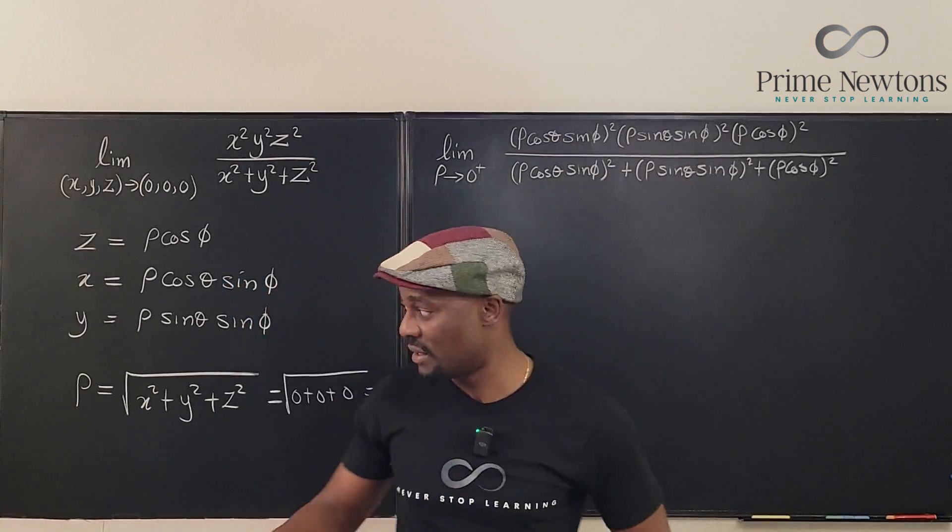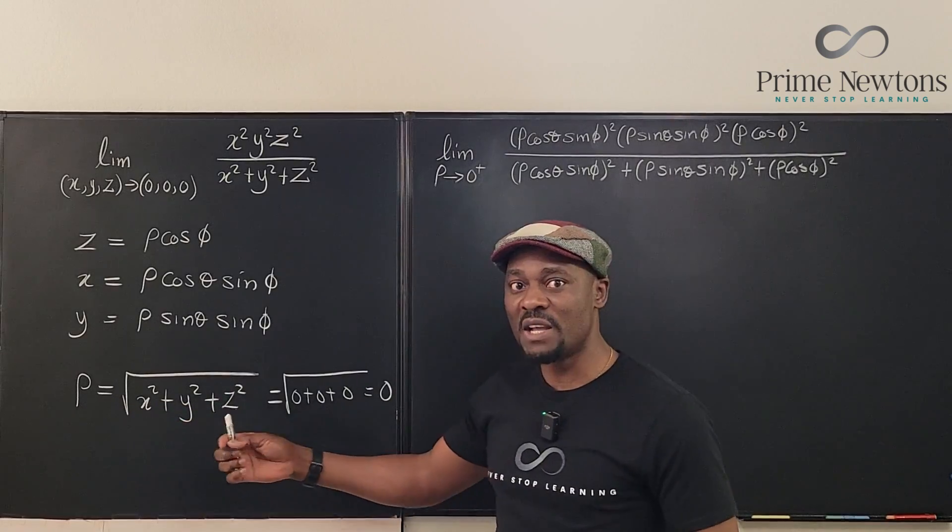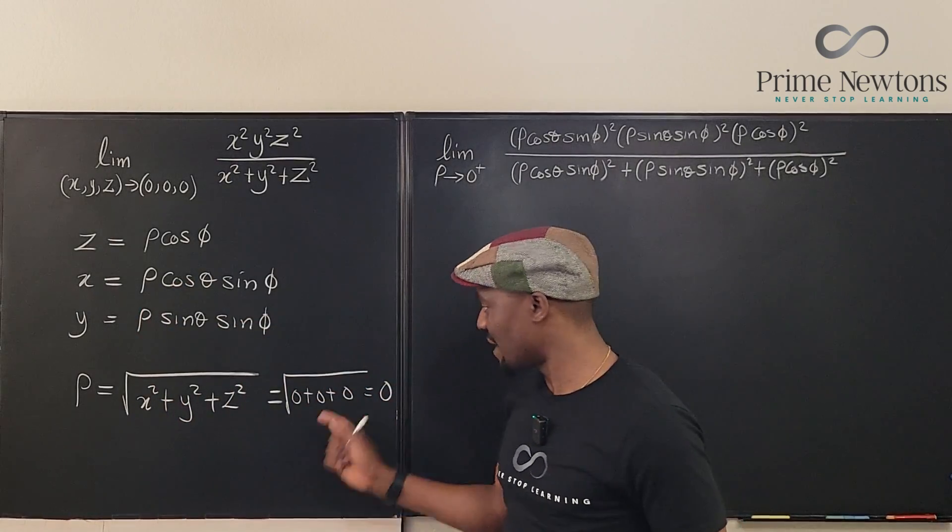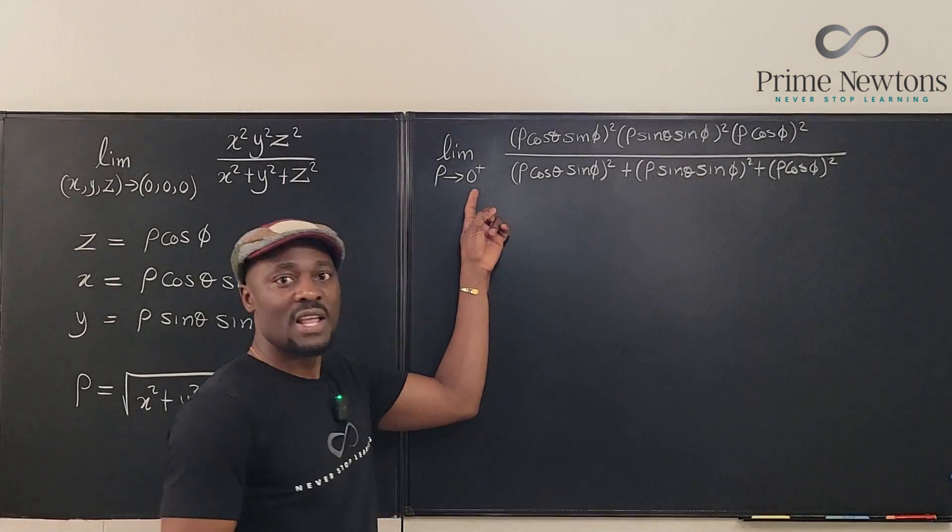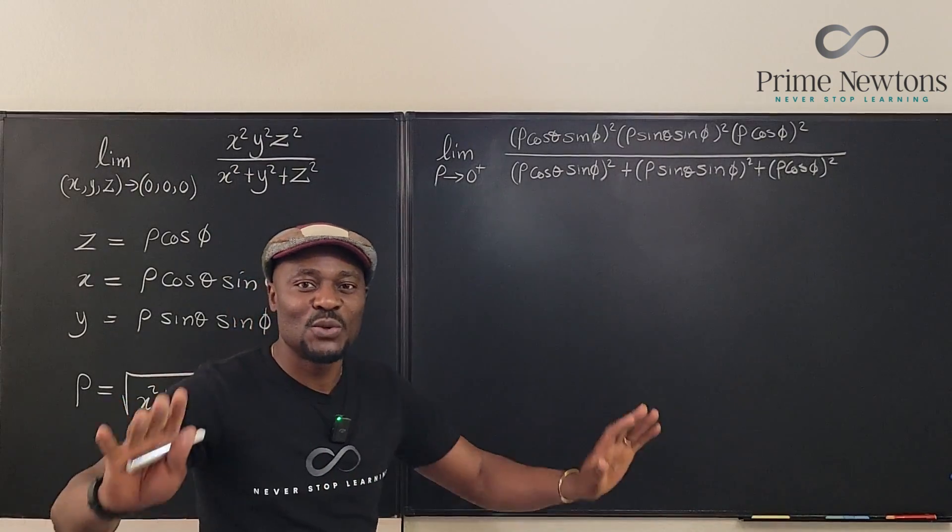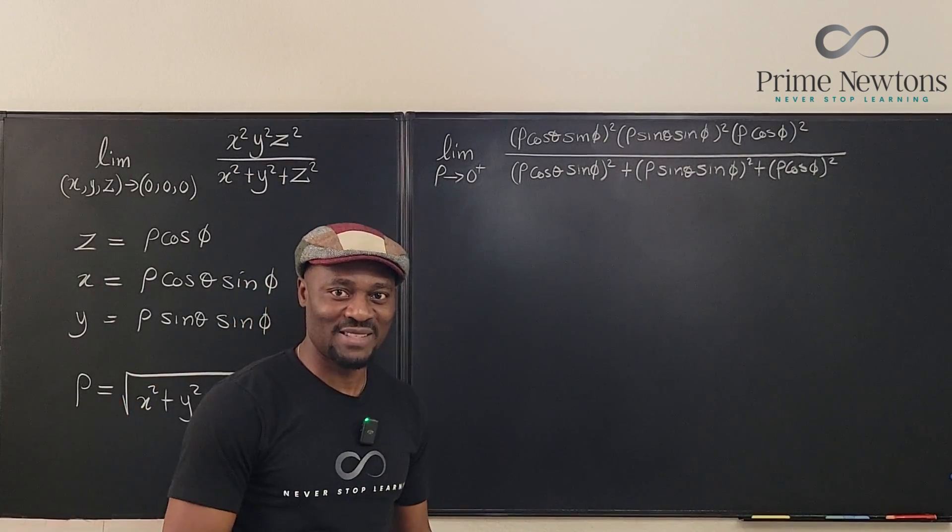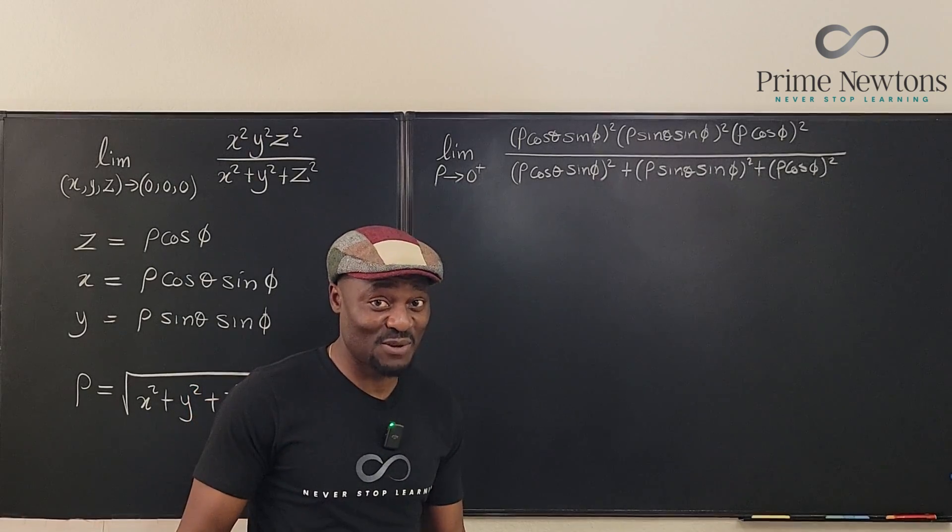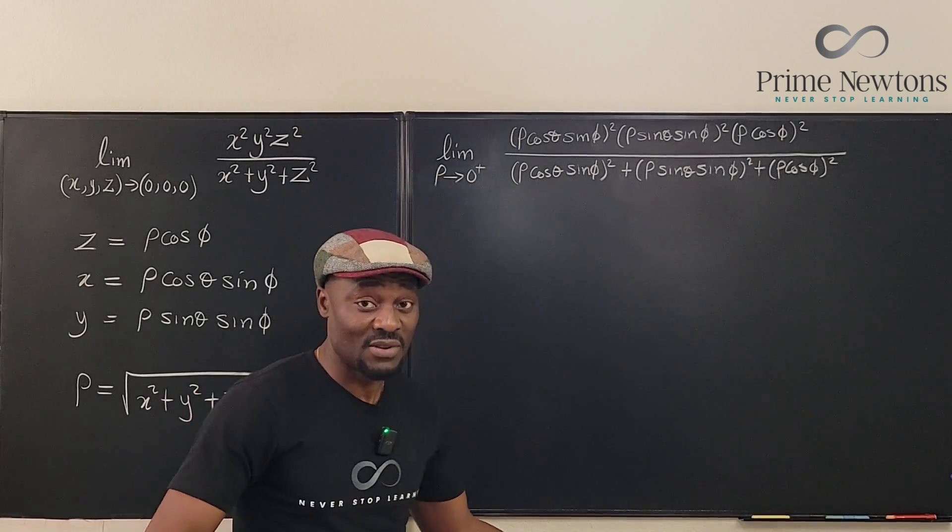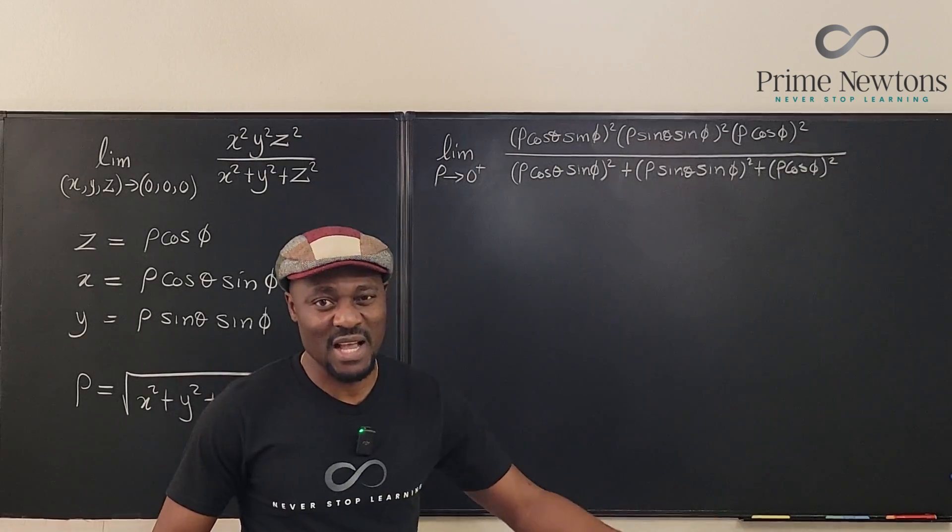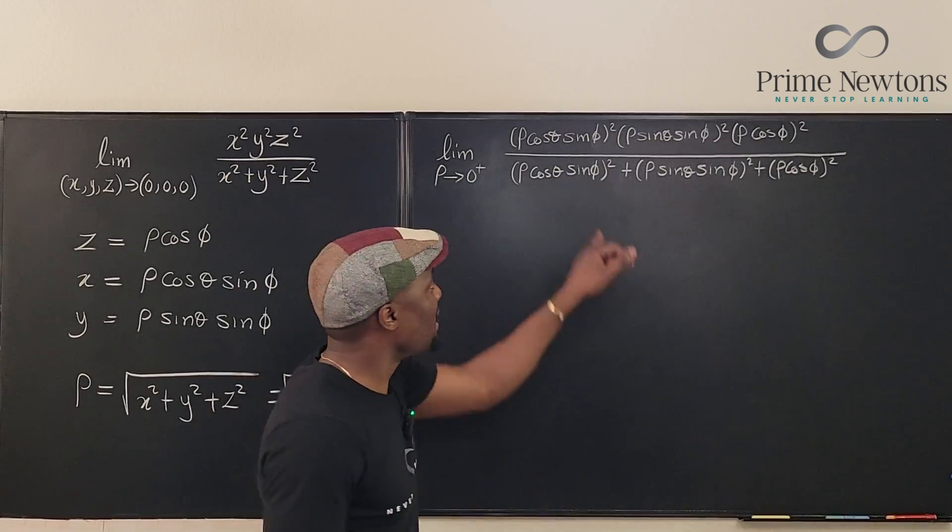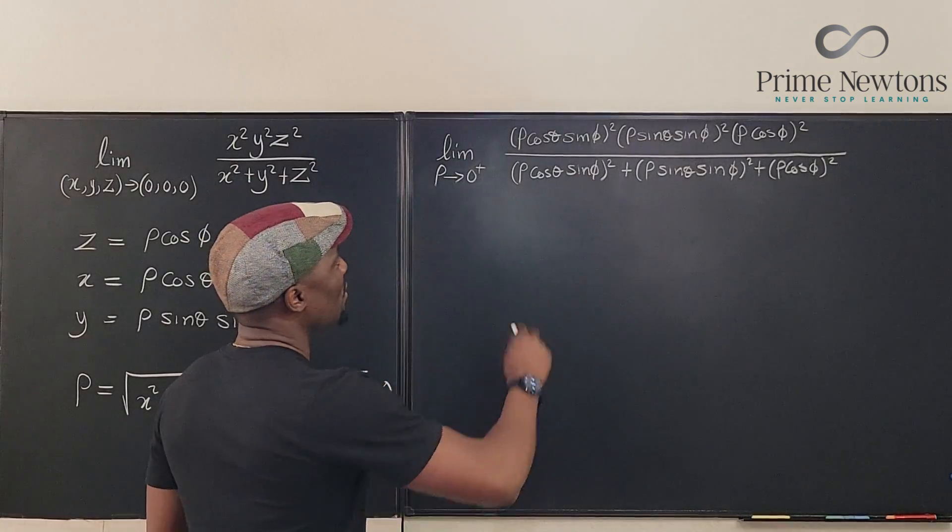And remember, rho must be positive. So we can only approach from the positive direction. There is no negative rho. And that's why I had to put a plus sign here. Everything else is just for you to do the simplification and get your answer. Remember, we already suspected from the beginning that the answer is going to be zero. We went in one direction, in the second direction we'll still get zero, but it was not sufficient. So now what do we do? We're going to square.